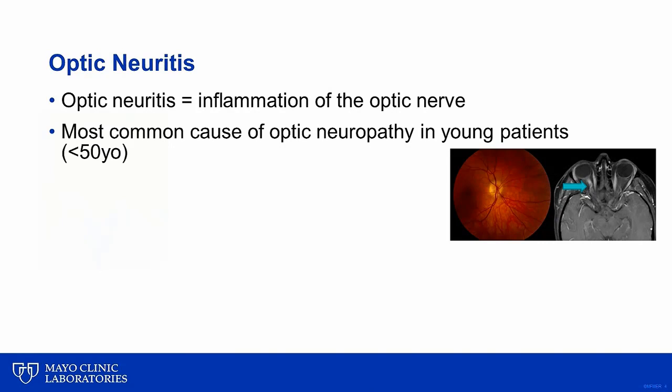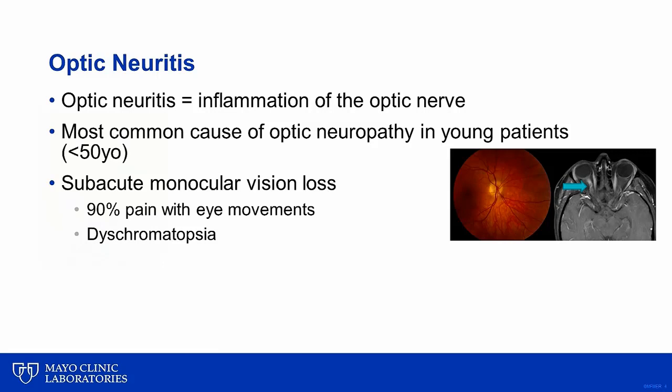As a background, optic neuritis is an inflammation of the optic nerve, which is typically caused by demyelination. It is the most common cause of optic neuropathy in young patients. Patients with optic neuritis present with subacute monocular vision loss, with the nature of vision loss typically within a few days. Vision loss can range from near-normal vision to no light perception. 90% of patients will have eye pain that is worsened with eye movements.